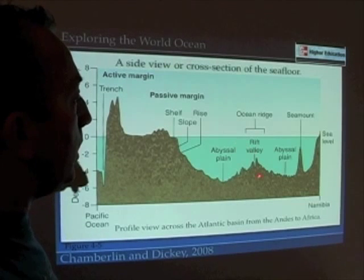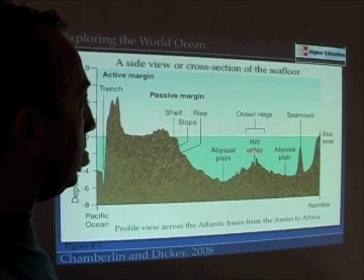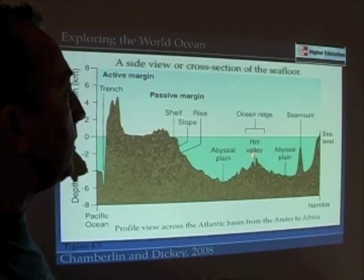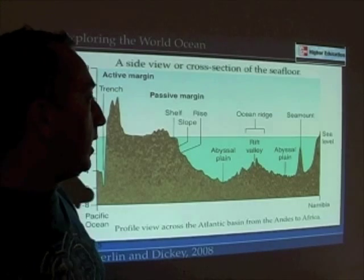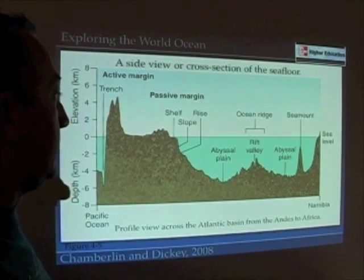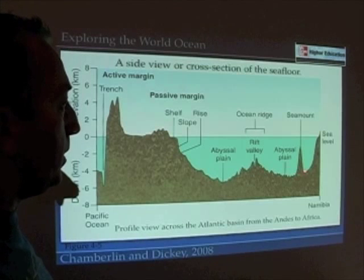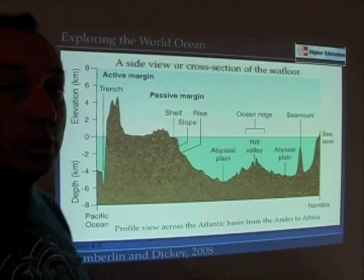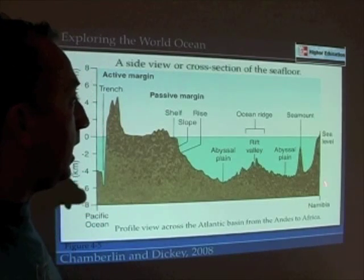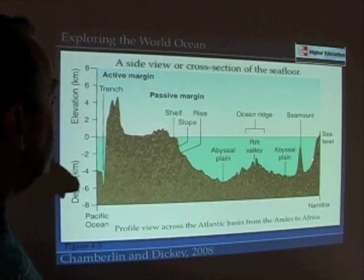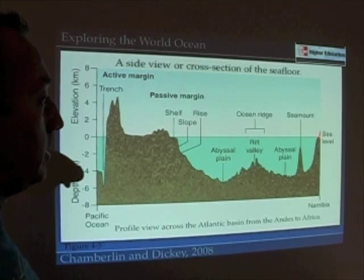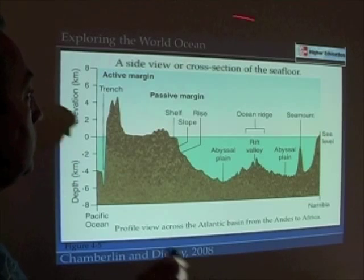The abyssal plains, the top of the oceanic ridge — and here in the Atlantic we have a rift valley, a feature common with slow-spreading ridges, as we learned in Chapter 3. Another abyssal plain on the other side of the oceanic ridge. We have a seamount, just an underwater mountain. And now here we have the coast of Africa, where we could also label the continental rise, the continental slope, and the shelf.